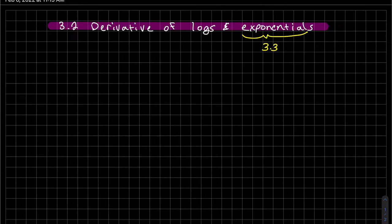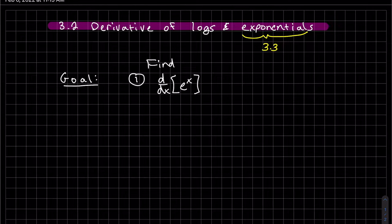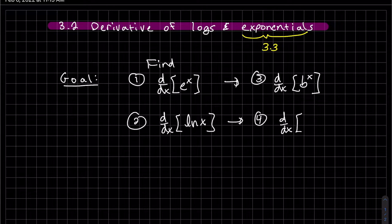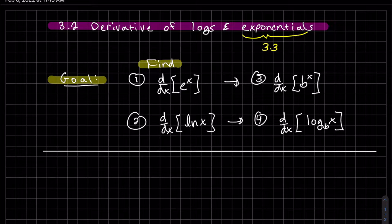We're going to do derivatives of logarithmic functions and exponentials. The derivative of exponentials is the next section, but I find it much easier to present both of them at the same time. Our goal is to first find the derivative of e to the x and natural log of x. We will use the definition of derivative to find the first one, and then we'll find the derivative of any base for the exponential and the log.